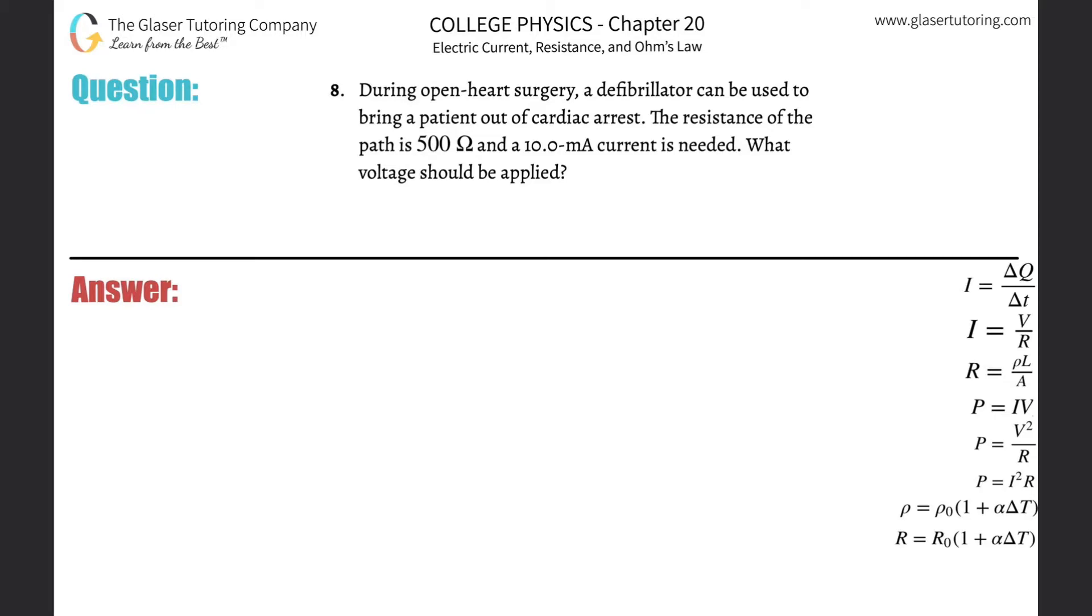Number eight. During open heart surgery, a defibrillator can be used to bring a patient out of cardiac arrest. The resistance of the path is 500 ohms and a 10 milliamp current is needed. What voltage should be applied?